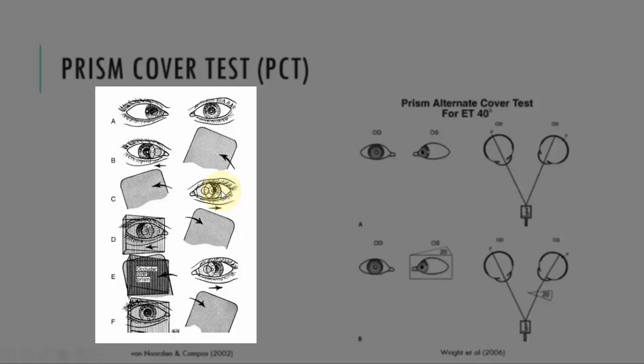So the first three images, or A, B and C here, are depicting that you've got strabismus, you perform your cover test, and then you proceed to the Prism Cover Test.